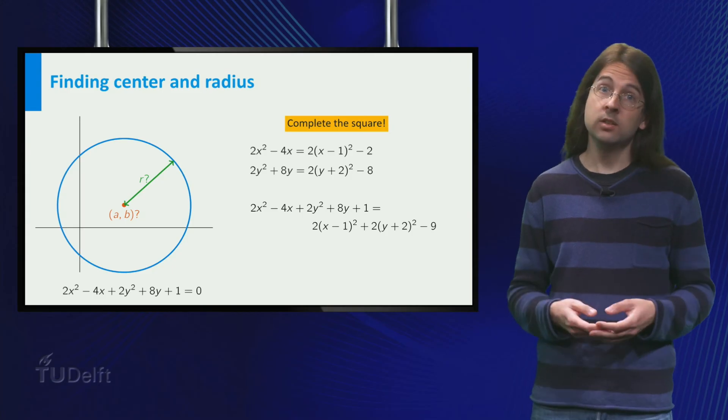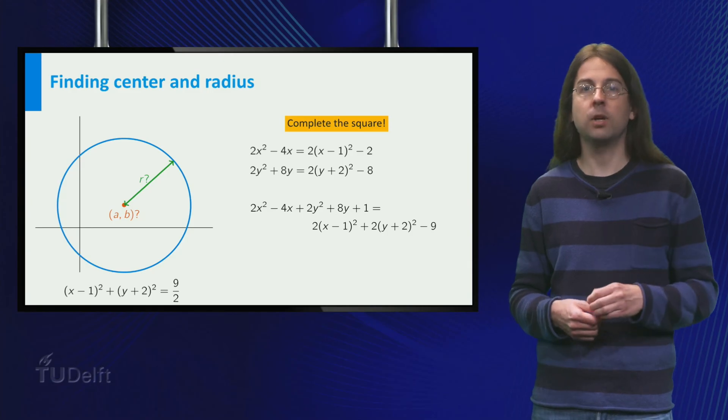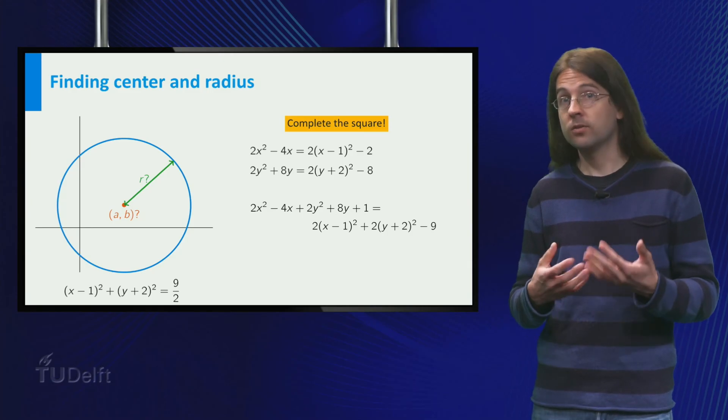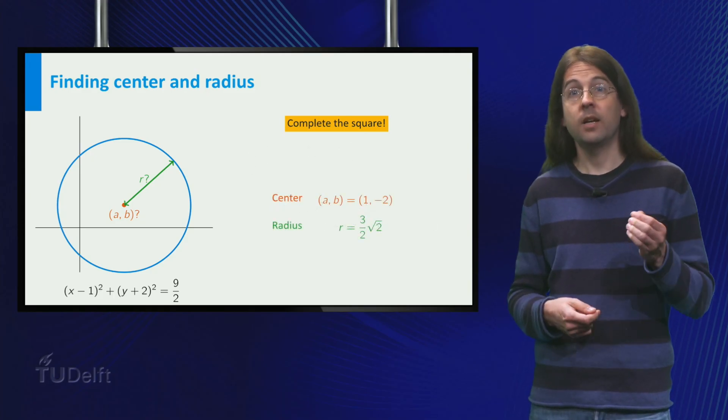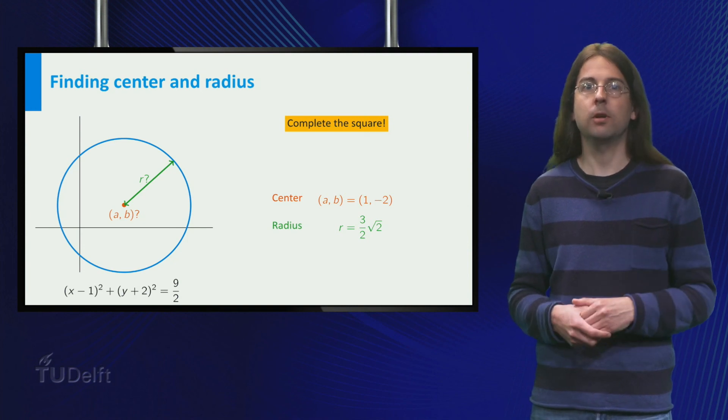In particular, the equation can be rewritten as x minus 1 squared plus y plus 2 squared equals 9 over 2. The center of this circle is just 1 comma minus 2, and the radius is the square root of 9 over 2, which is 3 over 2 square root 2.